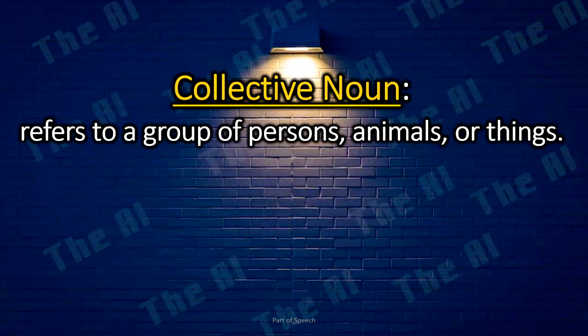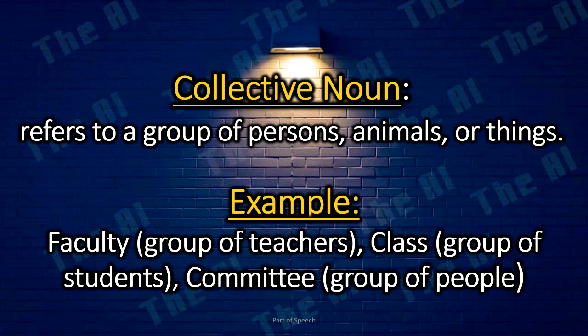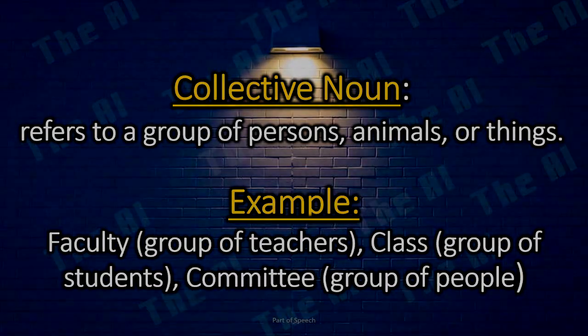Collective nouns refer to a group of persons, animals, or things. Examples: Faculty — group of teachers; Class — group of students; Committee — group of people.